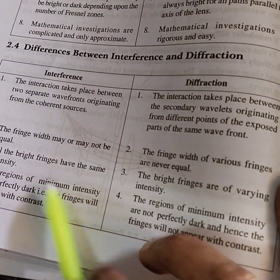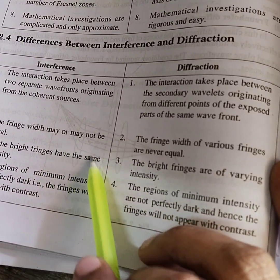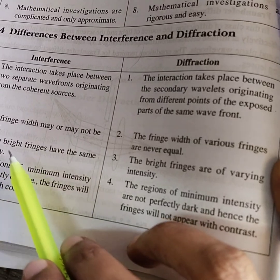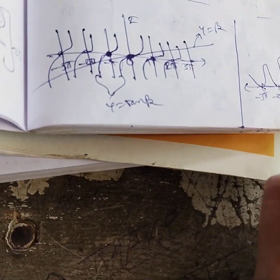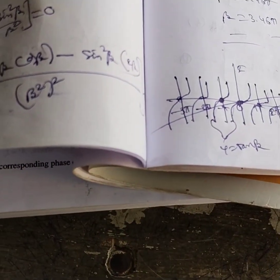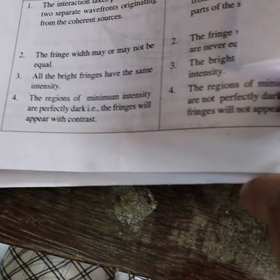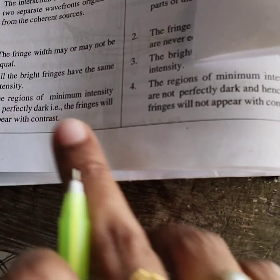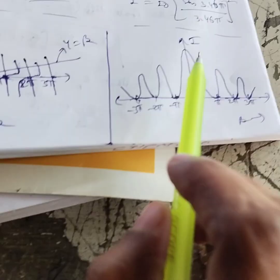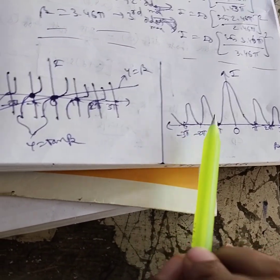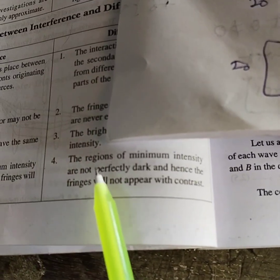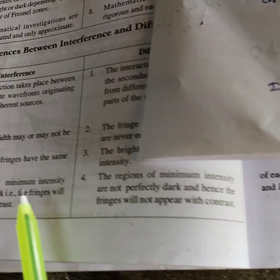In interference, all the bright fringes have the same intensity. The maxima values are the same and the variation gradually decreases. In diffraction, the brightness changes — the intensity of maxima gradually decreases. For interference, the minimum will be perfectly dark. But in diffraction, it will not be perfectly dark. This is the key difference between interference and diffraction.